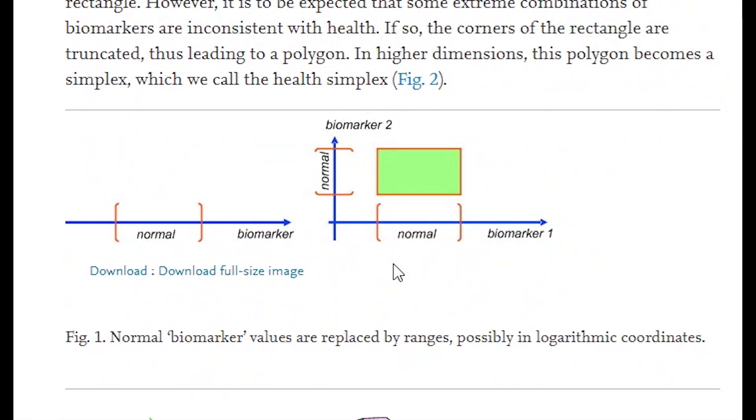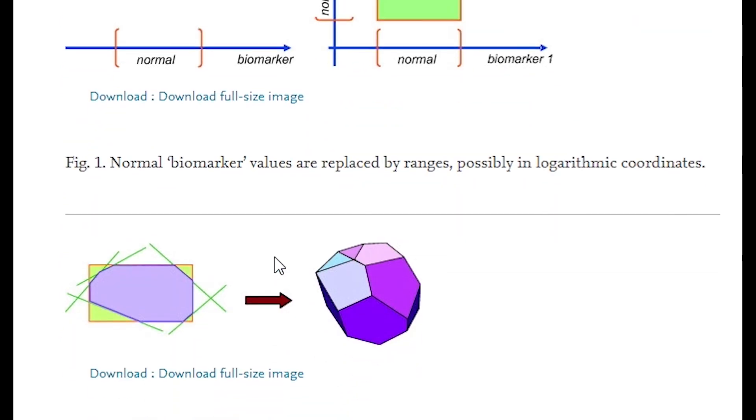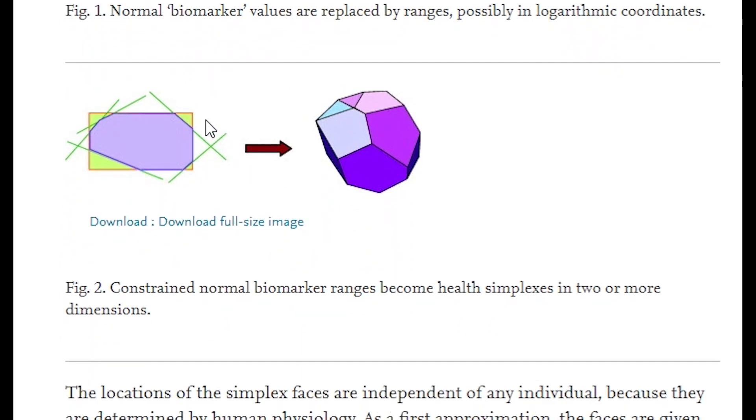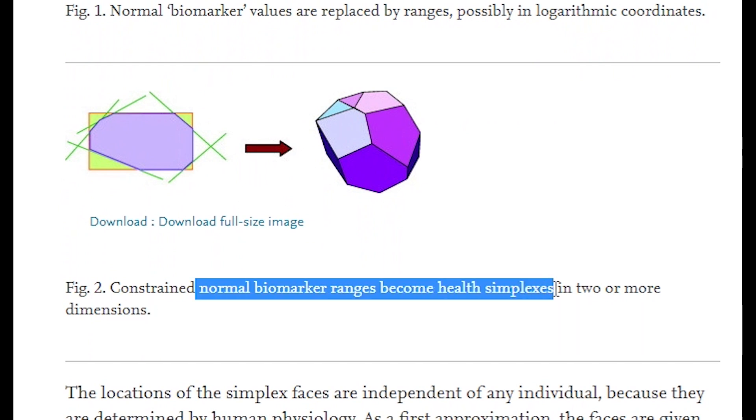If we pick any two parameters, the product of the ranges is a rectangle. Now, if we assume that extreme combinations are inconsistent with health, so you sort of truncate the corners, you end up with a polygon. And then if we add in all these other parameters, we end up increasing the number of dimensions of the polygon, and higher dimensions of polygons in mathematical terms is known as a simplex.